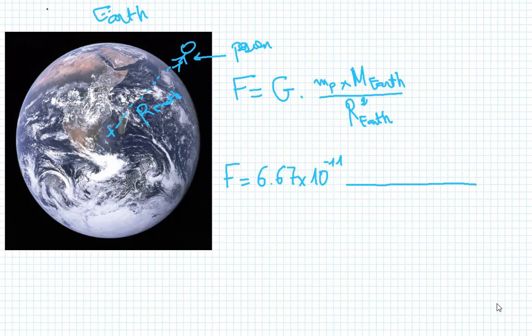Multiplied by the mass... Let's suppose that this person has a mass of MP equals 80 kilograms. So it's going to be 80 times mass of Earth, which is known and equals 5.972 times 10 to the power 24.